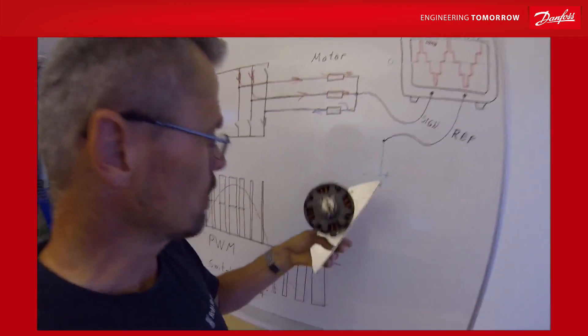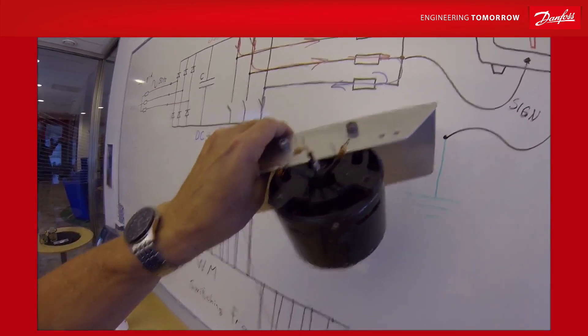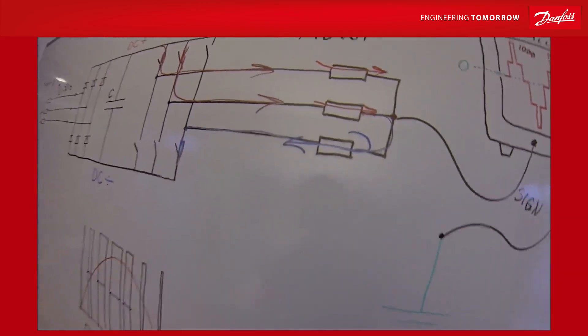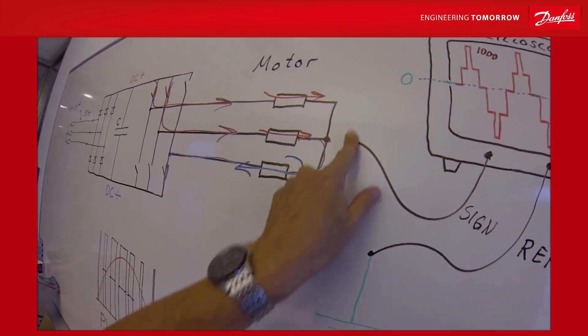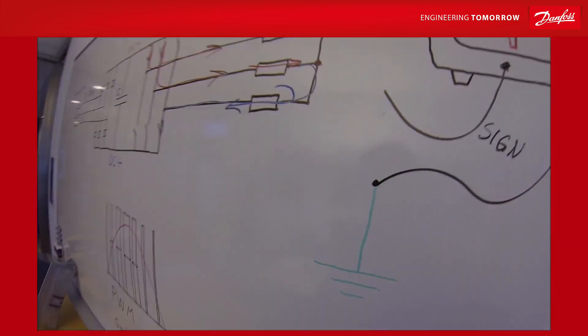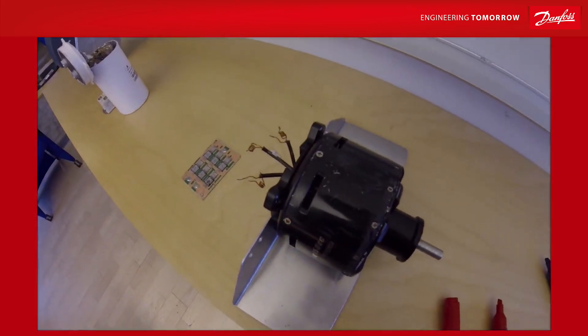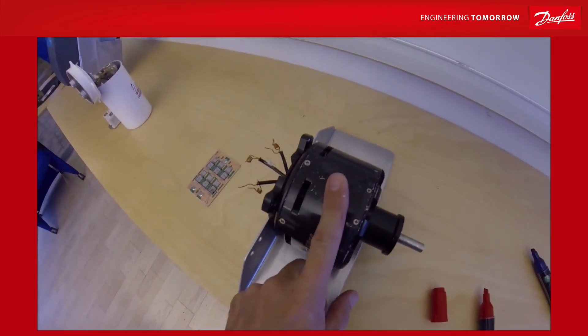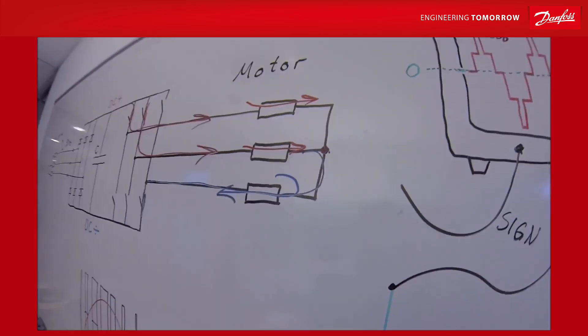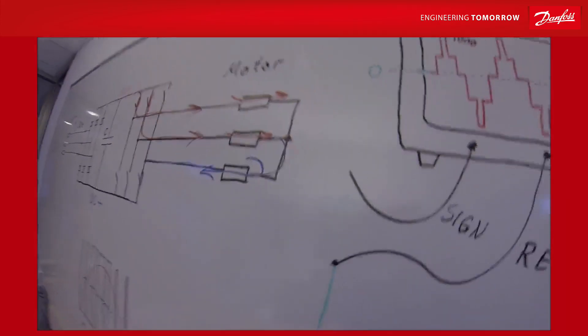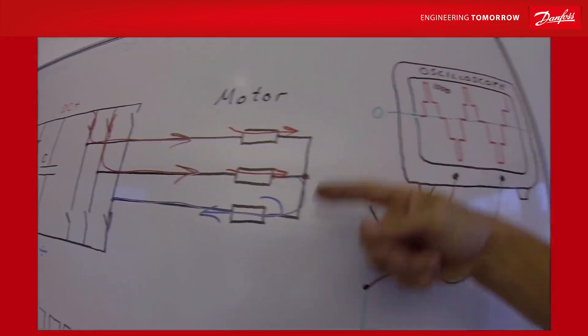What is the consequence on a motor when you have a star point which is jumping up and down? Well, actually not much, because this star point is floating inside all motors. There is no connection between this star point and the metal in the motor, at least not in an ideal world.